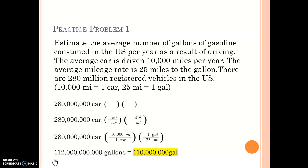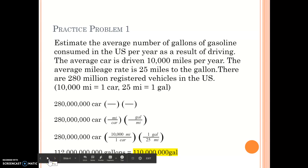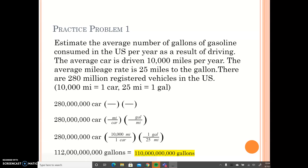Practice problem number 1: Estimate the average number of gallons of gasoline consumed in the US per year as a result of driving. The average car is driven 10,000 miles per year, the average mileage rate is 25 miles to the gallon, and there are 280 million registered vehicles in the US. The two conversion factors are: 10,000 miles equals one car, and 25 miles equals one gallon. Your starting value is 280 million registered vehicles, and you will need to convert this quantity twice, so you set up two parentheses.